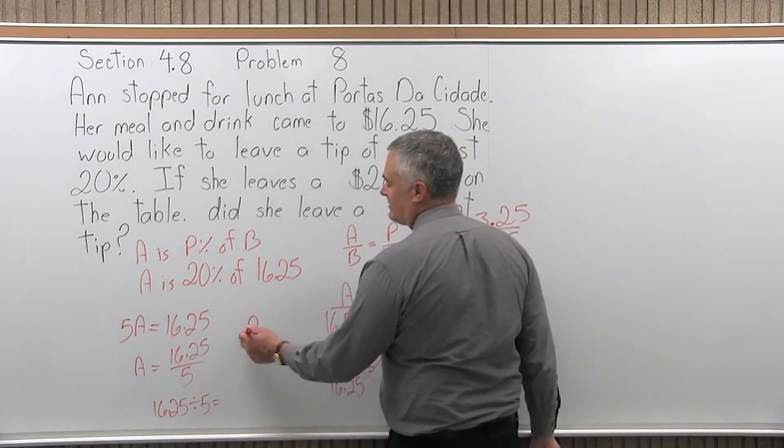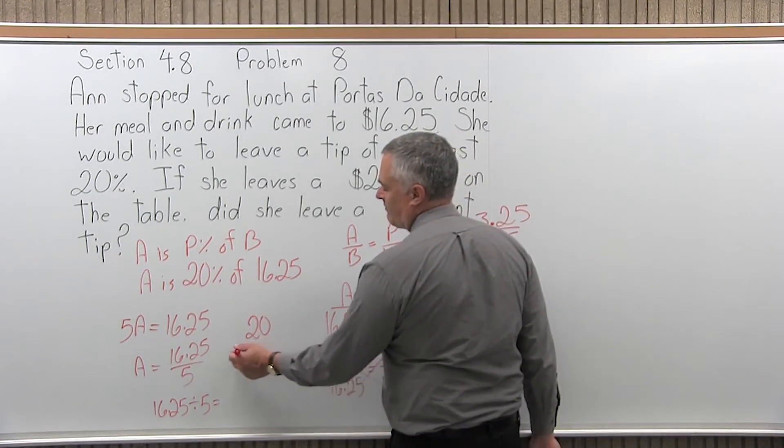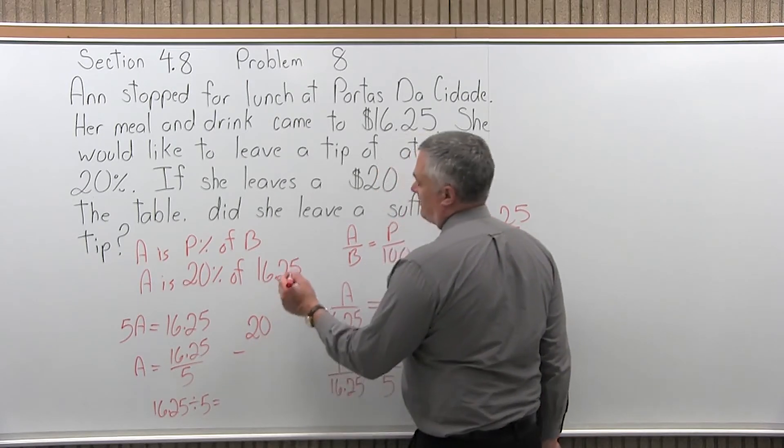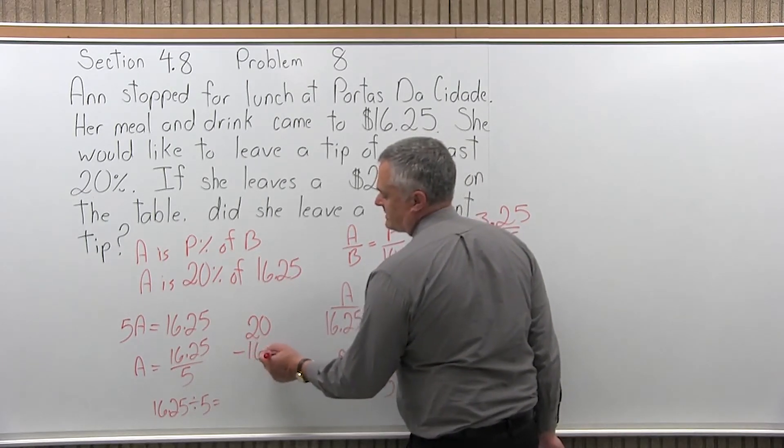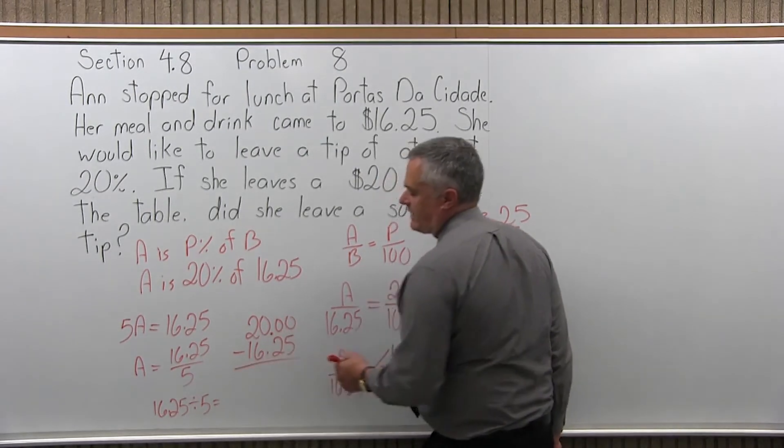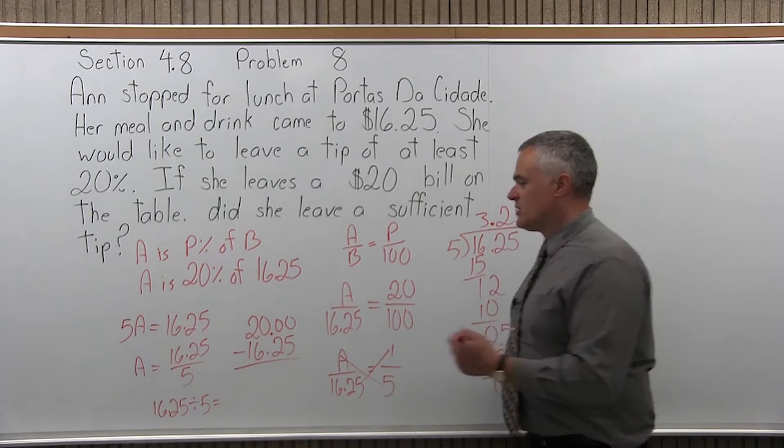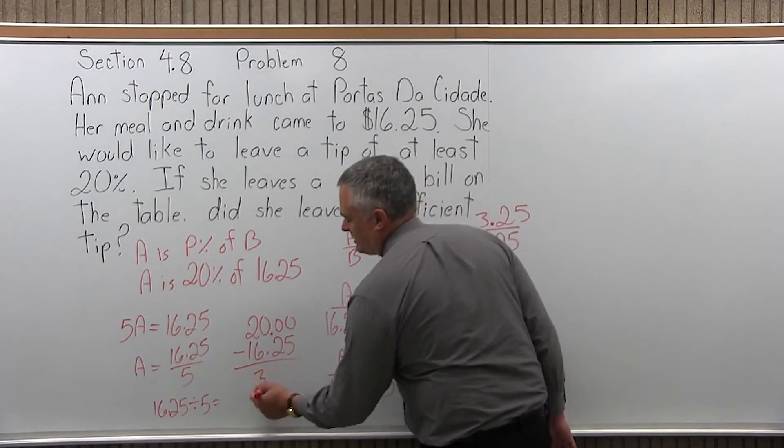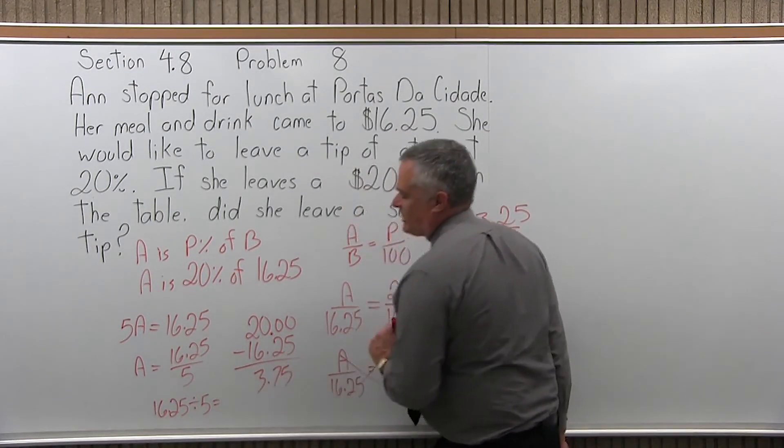And it turns out that you did. So, if you do 20 minus the cost of the meal, $16.25. And notice, if you want to do this without a calculator, you have to line up the decimals. So, if you're good at making change, you'll be able to do it right away, it's $3.75.